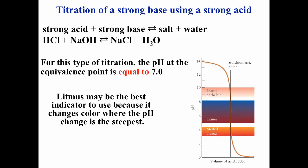For a titration of a strong acid and strong base, say HCl and sodium hydroxide, the equilibrium constant for the reaction has to be very large — you want to consider that the reaction goes to completion. At the equivalence point, you've added enough titrant to completely react with the analyte, so you're basically left with just products. In this case, you'd be left with sodium chloride and water, which gives a pH of 7. So for a strong acid/strong base titration, the equivalence point should be pH 7.